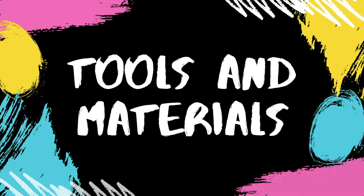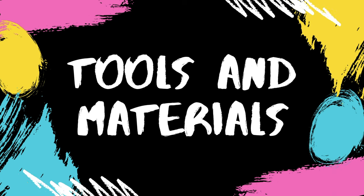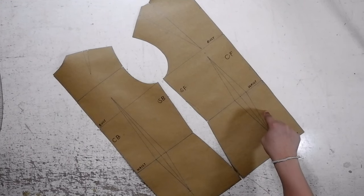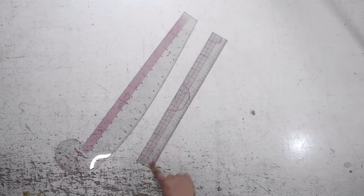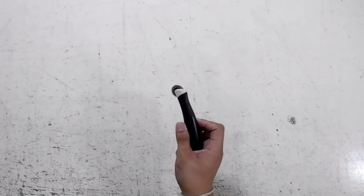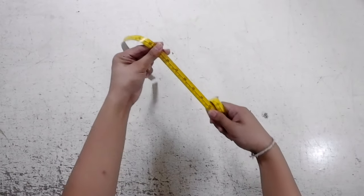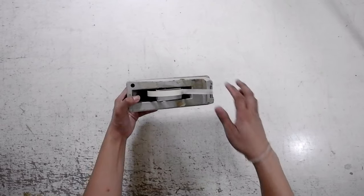These are the tools and the materials that I'll be using for this tutorial: basic torso slopper back and front, a pencil, fashion rulers, tracing wheel, pattern papers, measuring tape, and masking tape.